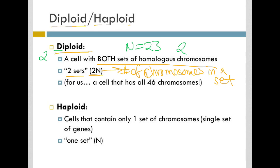Therefore, our 2n number is going to be 46, which is our diploid number when we have all of our sets of chromosomes. So for us, that's a cell with 46 chromosomes.